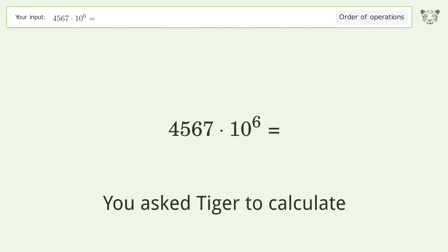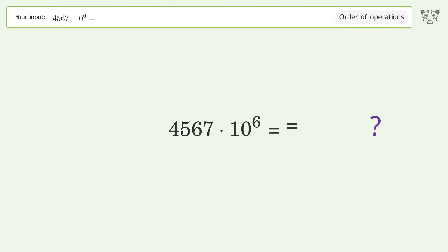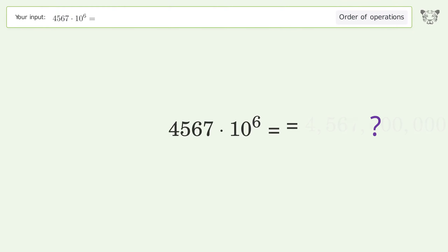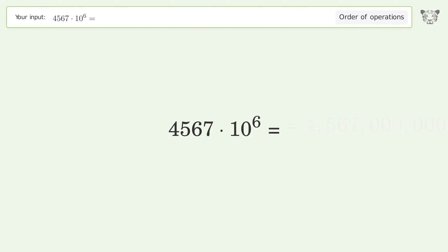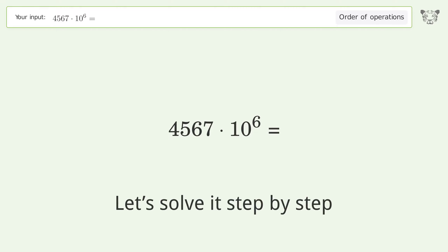You asked Tiger to calculate this. It deals with the order of operations. The final result is four billion, five hundred sixty-seven million. Let's solve it step by step.